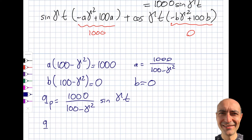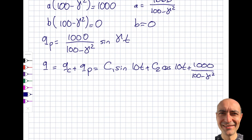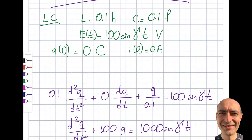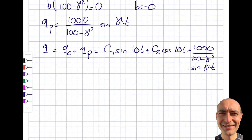Summing complementary and particular solutions: Q(t) = c₁ sin(10t) + c₂ cos(10t) + [1000/(100 − γ²)] sin(γt). Does this end the problem? No — the charge is zero at t = 0 and the rate of change of charge (current) is also zero at t = 0, so I still need to use those conditions to find c₁ and c₂.